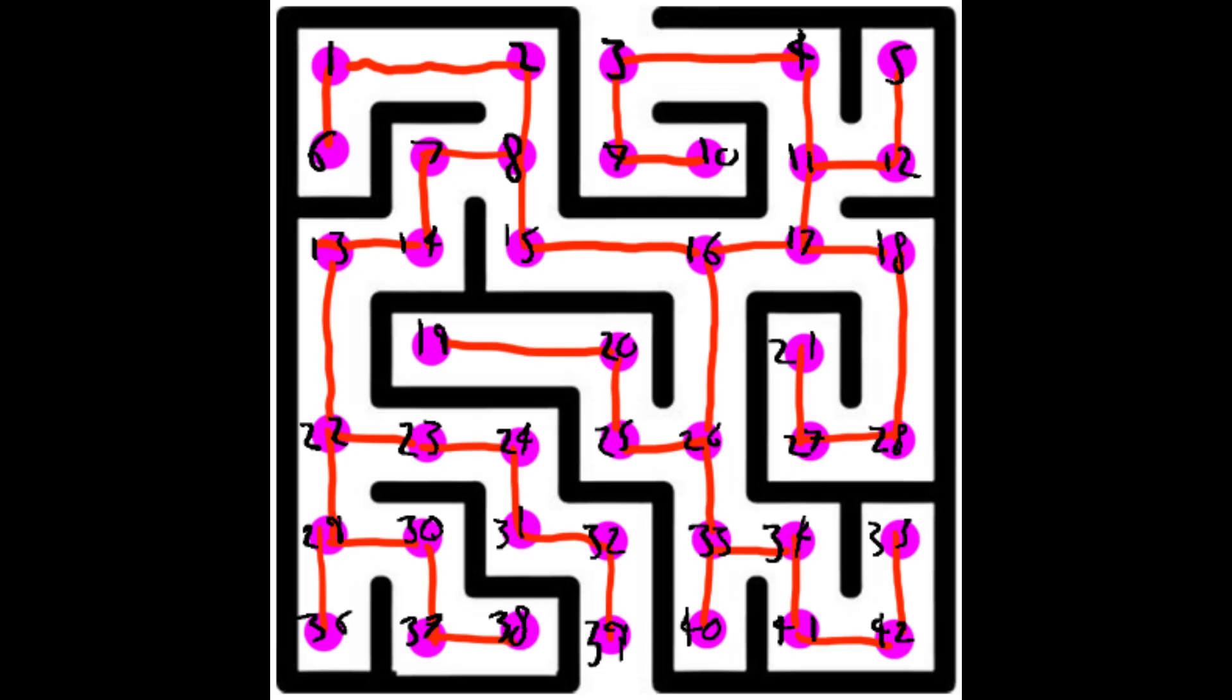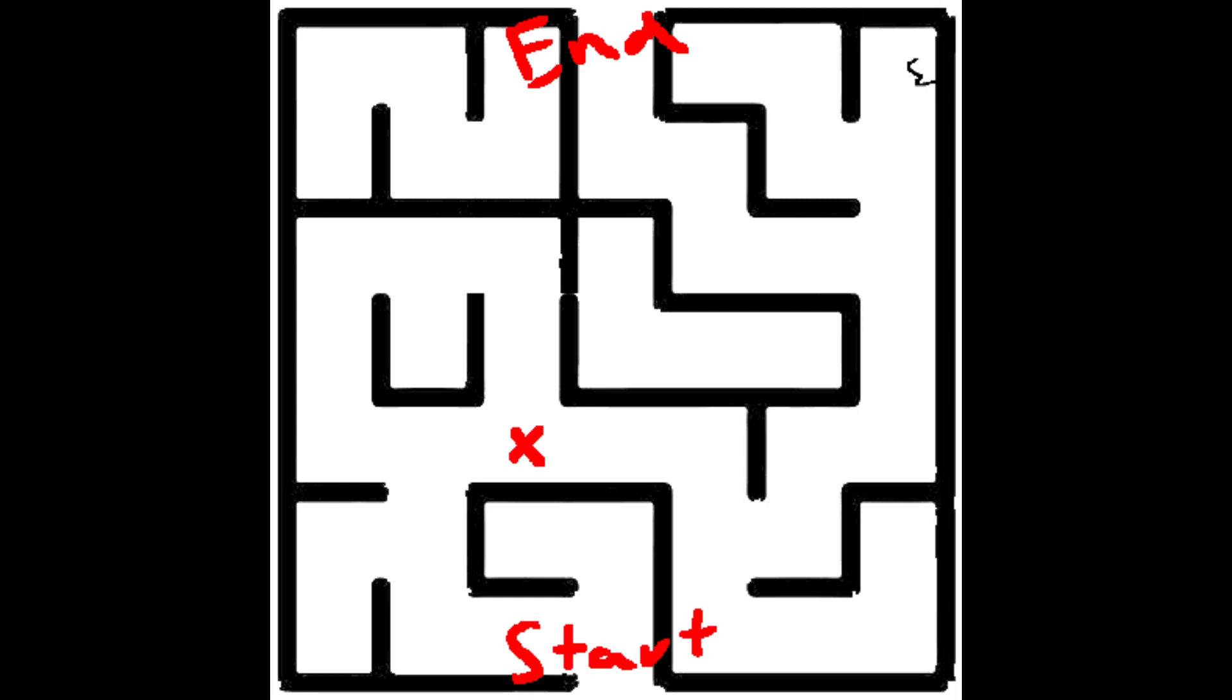So for each node from our start position, we check which direction we can move in. We check which is closest to our goal. Yeah, let's say the closer option is to go up. We check what happens if we go up, okay?